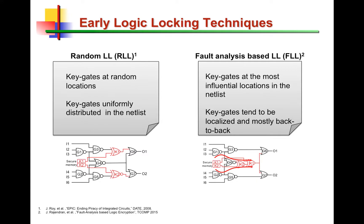In random logic locking, the idea is very simple: key gates are inserted at random locations on the netlist. This was the very first approach in logic locking, proposed in 2008 by two groups — the University of Michigan and Rice. It produces a key that protects the design, but the key gate locations are chosen at random.